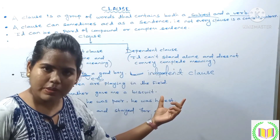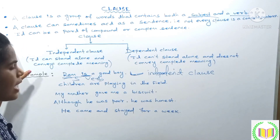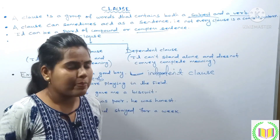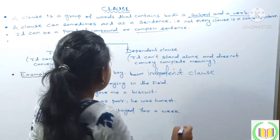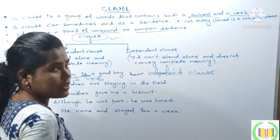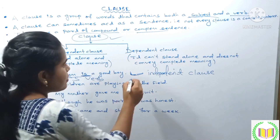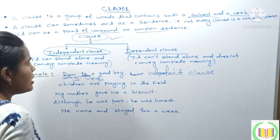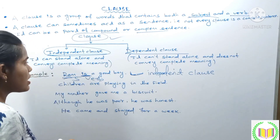A clause can sometimes act as a sentence, but not every clause is a complete sentence. A clause can be found in a compound sentence and a complex sentence. So let us talk about what is a compound sentence and what is a complex sentence. The clause types are: independent clause and dependent clause. An independent clause can stand alone and convey complete meaning.